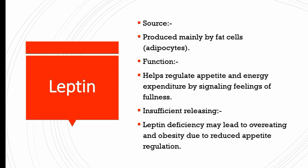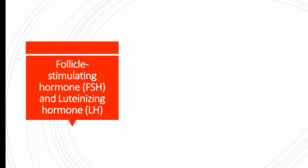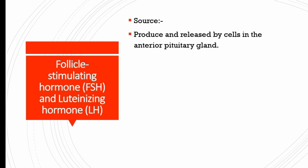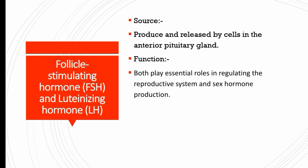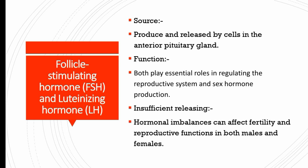Follicle-stimulating hormone (FSH) and luteinizing hormone (LH) are produced and released by cells of the anterior pituitary gland. Both play essential roles in regulating the reproductive system and sex hormone production. Hormonal imbalances in FSH and LH can affect fertility and reproductive function in both males and females.